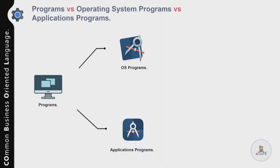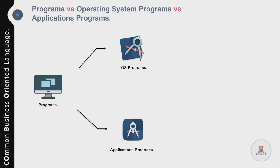Programs are broadly divided into two categories. The first is operating system programs, which control the overall operation of the computer — for example, Windows, Linux, or z/OS. The second category is application programs, which perform the task required by the user.